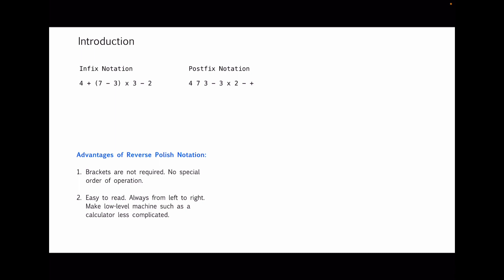A second benefit is that it's easy to read — not necessarily for humans, but very easy for a low-level machine like a calculator. It reads strictly left to right. With infix notation, even though it's also left to right, you have to jump back and forth because of parentheses and order of operations. For example, with 4 plus parentheses 7 minus 3, you leave the 4, jump to 7 minus 3, then do the multiplication, then go back to 4 — whereas Reverse Polish Notation doesn't require that.